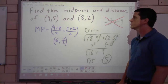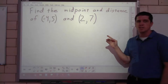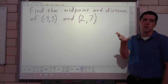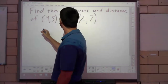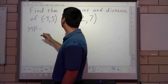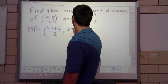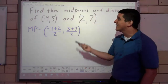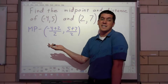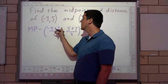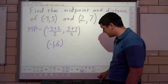I want to do one more problem — not because of the midpoint, but more so because of the distance. Pause and try it. For the midpoint of (-4, 5) and (2, 7): (-4 + 2)/2 and (5 + 7)/2. Quick side note — it doesn't matter which one you call x₁ and y₁; they're just different x's and y's. That gives -2/2 = -1 and 12/2 = 6. So the midpoint is (-1, 6).